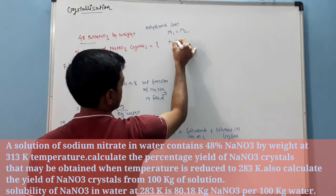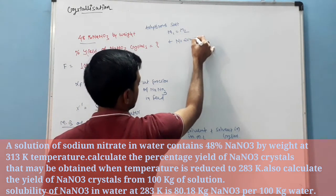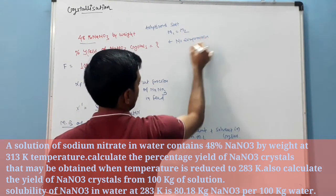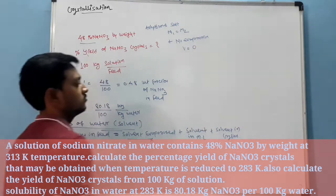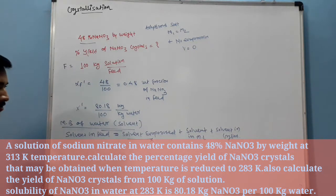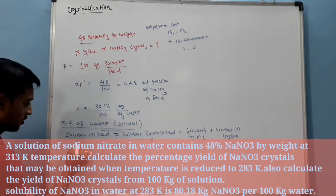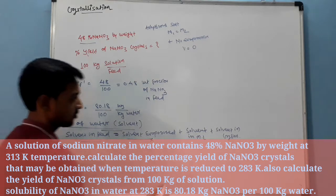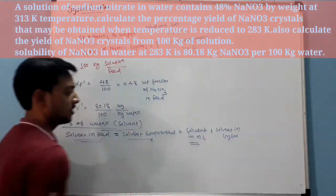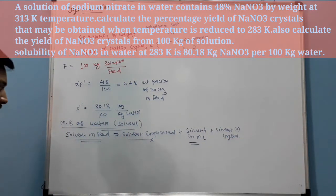That means M1 is equal to M2 plus no evaporation. So V is equal to 0. So this equation reduces: solvent in feed is equal to solvent in mother liquor.